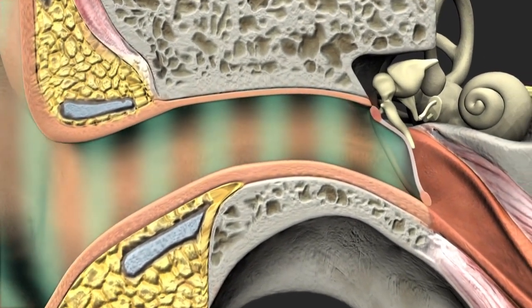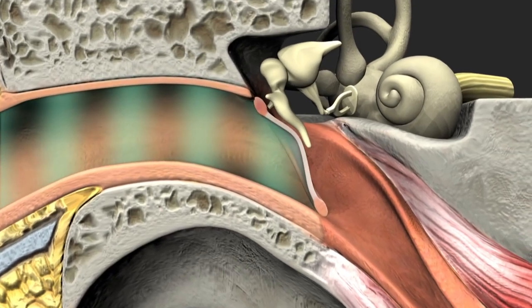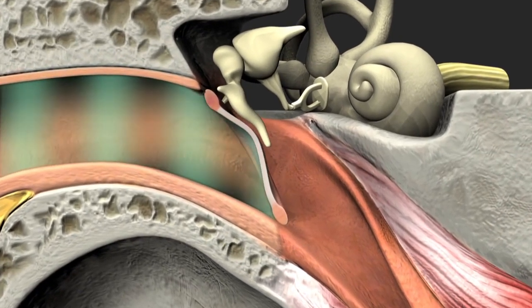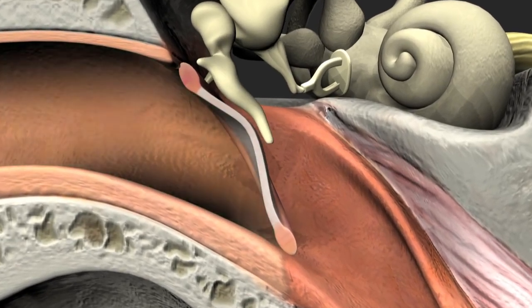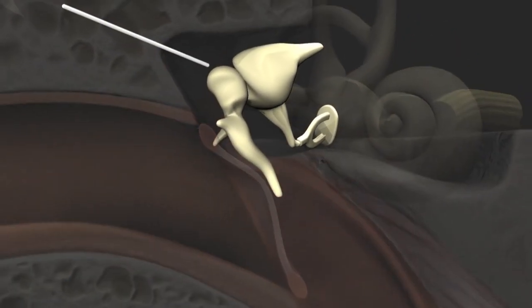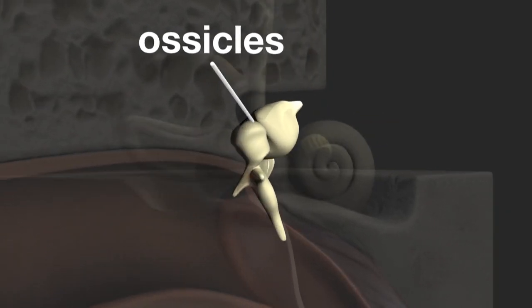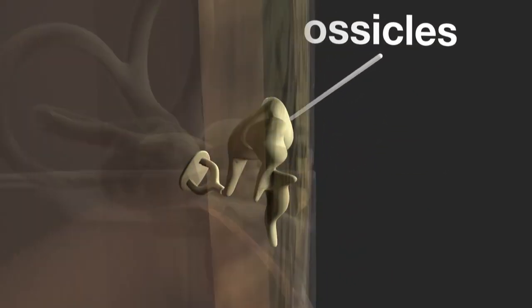Sound waves enter the ear canal and strike the tympanic membrane, setting it in motion. The louder the sound, the more the membrane moves. The middle ear also contains three small bones known as the ossicles.